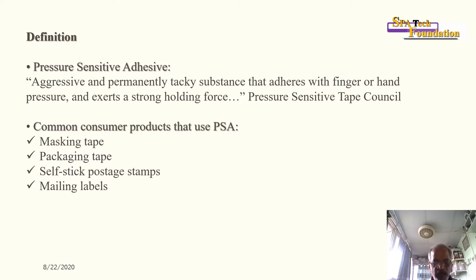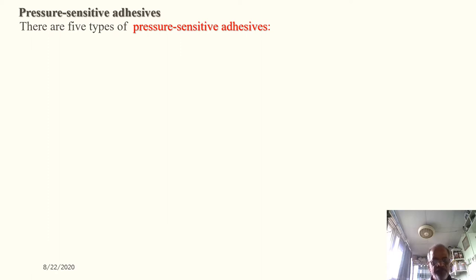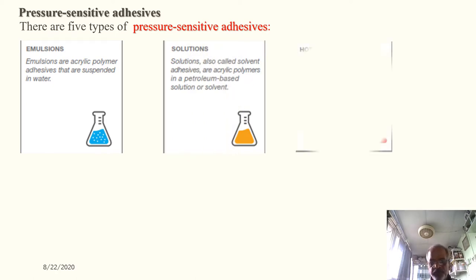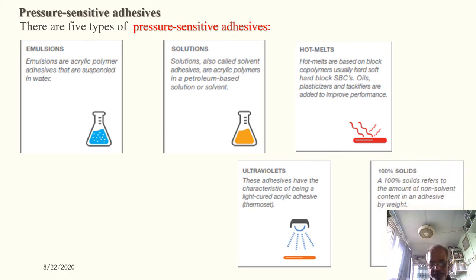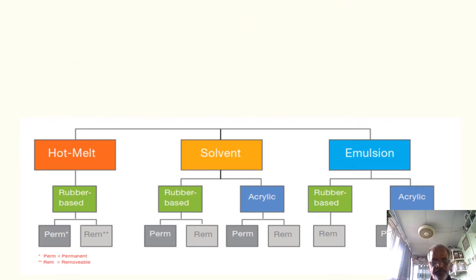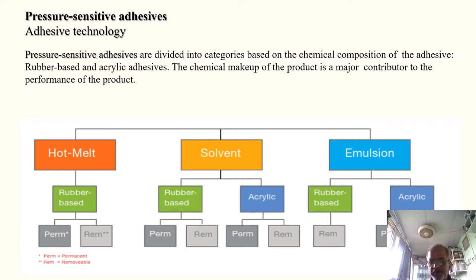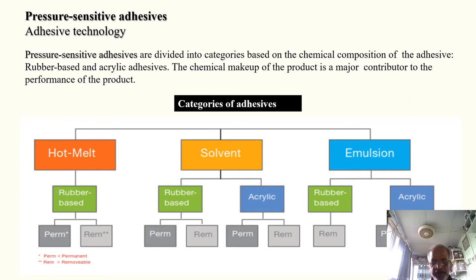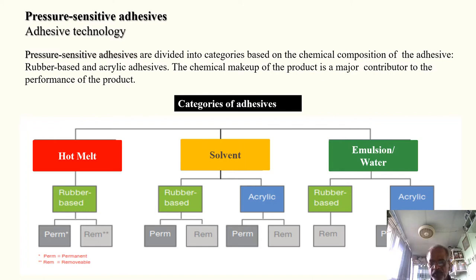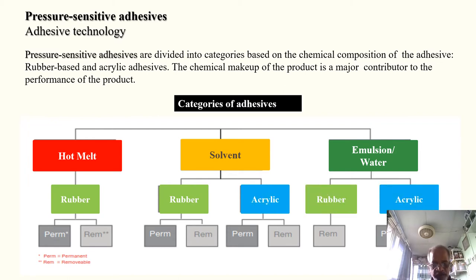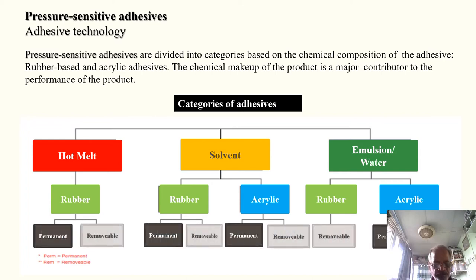Other common PSA examples include self-stick postage stamps and Mylar labels. There are five types of pressure-sensitive adhesives: emulsion, solution, hot melt, UV-cure, and 100% solid. PSA technology is divided into categories based on chemical composition: rubber-based and acrylic adhesives. The chemical makeup is a major contributor to product performance. These adhesives can be permanent or removable.